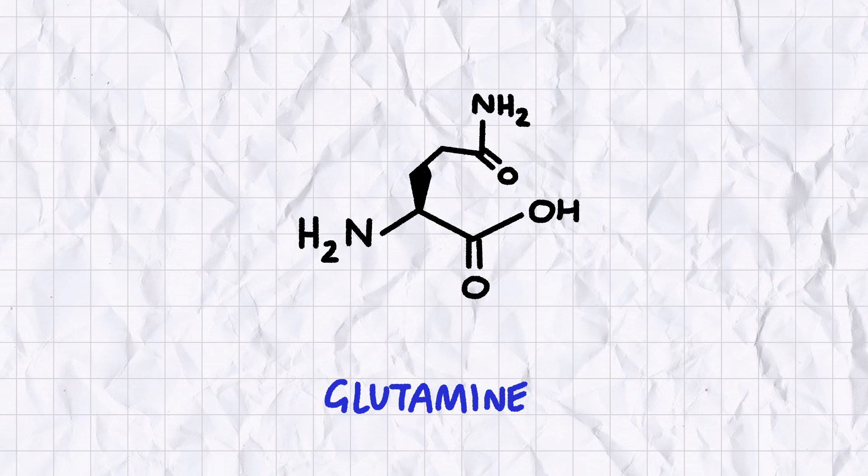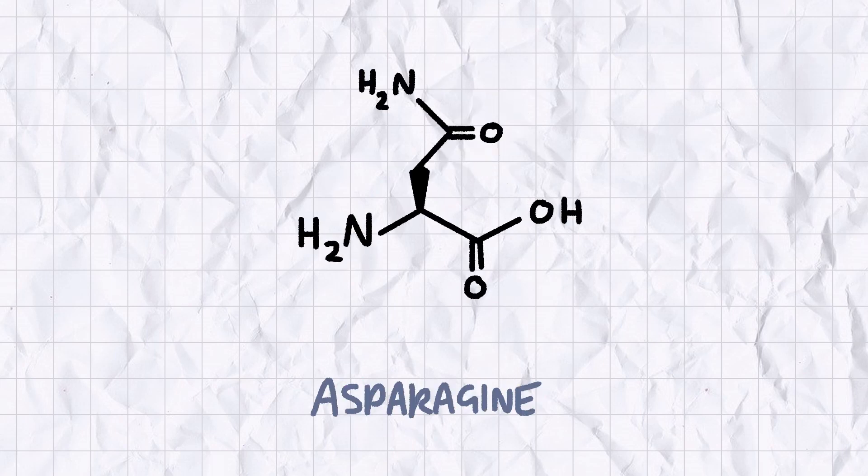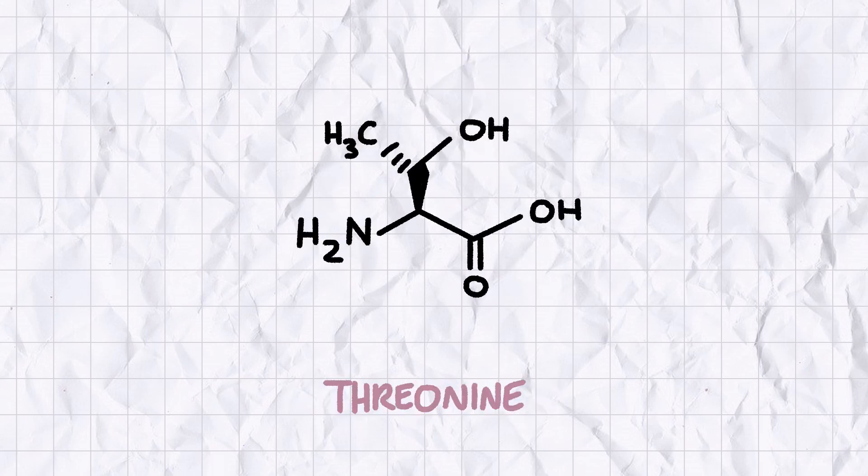There's alanine, arginine, cysteine and glutamine, tryptophan, proline, serine, asparagine, glycine and glutamic acid and threonine and tyrosine.